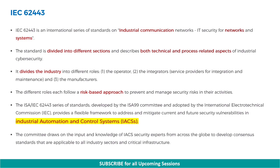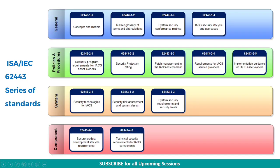The different roles follow a risk-based approach to prevent and manage security risks in their activities. The 62443 series of standards, developed by the ISA 99 Committee and adopted by the International Electrotechnical Commission, provides a flexible framework to address and mitigate current and future security vulnerabilities in industrial automation and control systems (IACS). The committee draws on the input and knowledge of IACS security experts from across the globe to develop consensus standards applicable to all industry sectors and critical infrastructure.